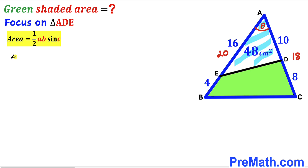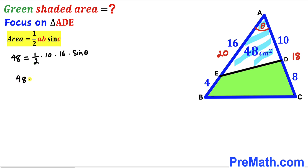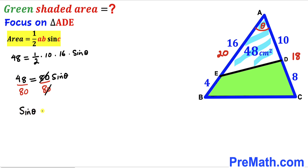Setting up the equation: 48 equals one half times 10 times 16 times sine of theta. Simplifying one half times 10 times 16 gives 80, so 48 equals 80 times sine of theta. Dividing both sides by 80 gives sine of theta equals 48 over 80, which simplifies to 3 over 5. So sine of theta equals three-fifths.